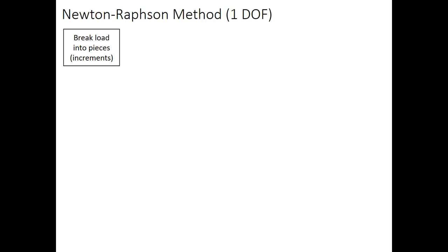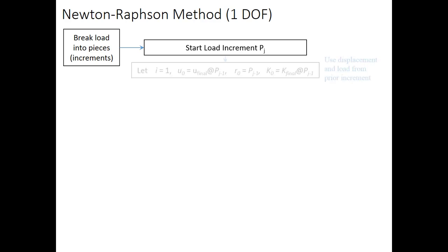The smaller the pieces, the more likely you'll get convergence. We're going to call each one of those pieces a load increment. So, we're going to start with load increment P sub J. So, J is going to start at one and go up to as many increments as we need to break the total load into a small enough piece to get convergence.